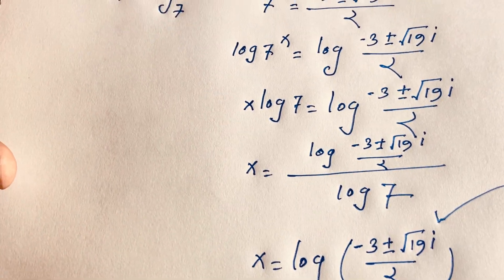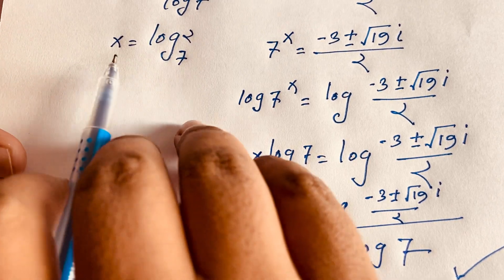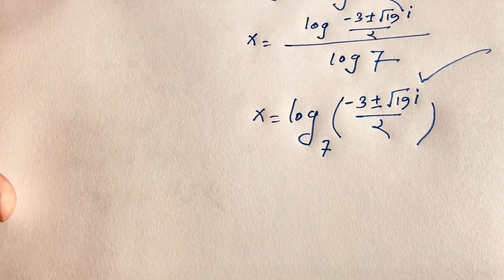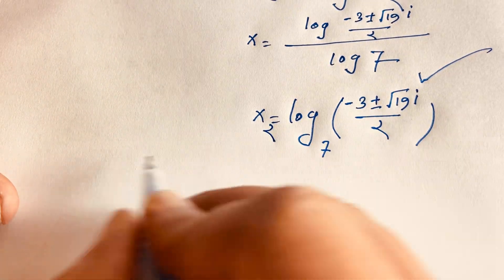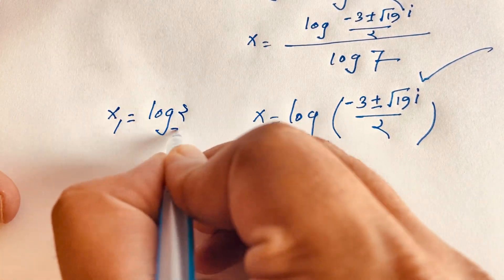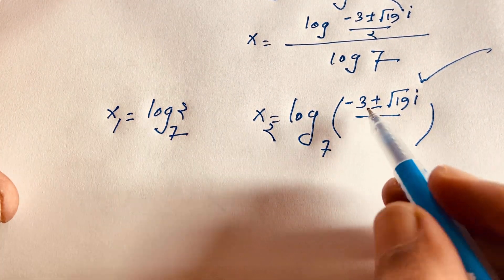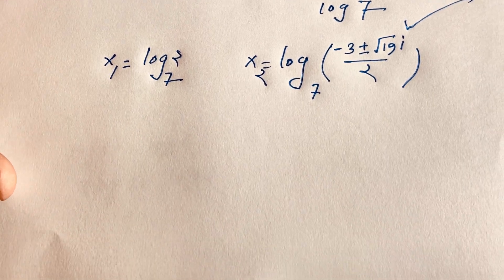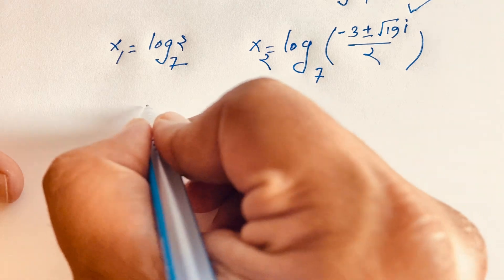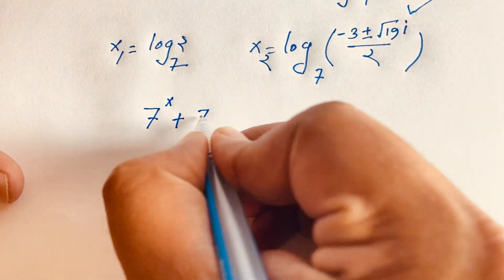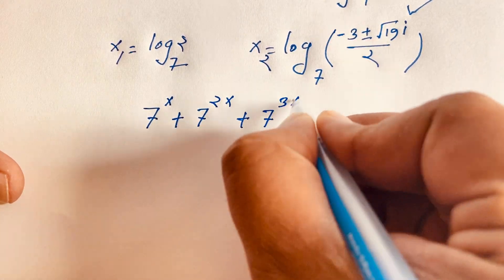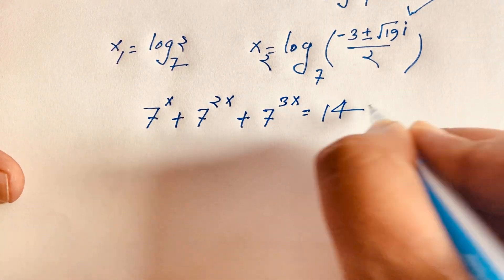So we have two answers: the real answer is x equals log base 7 of 2 (x₁), and the complex answers involve plus and minus variants. Now let's verify by substituting back: 7 to the power x plus 7 to the power 2x plus 7 to the power 3x should equal 14.